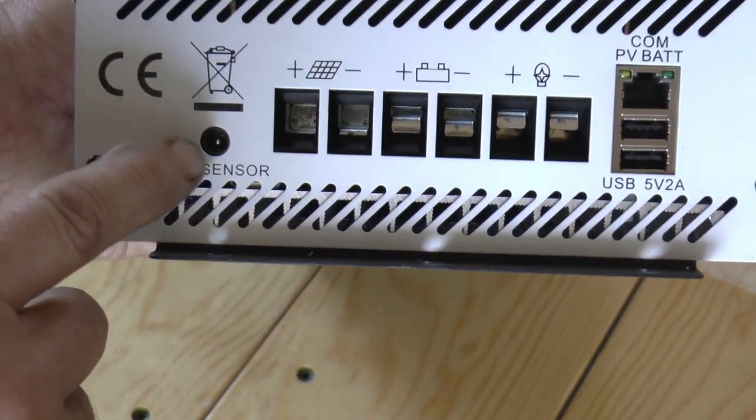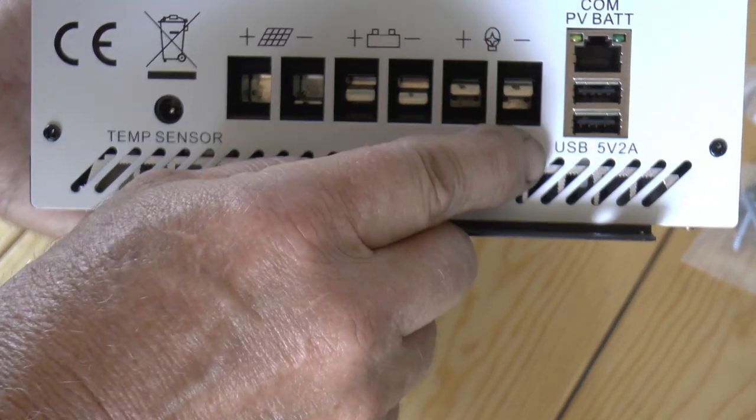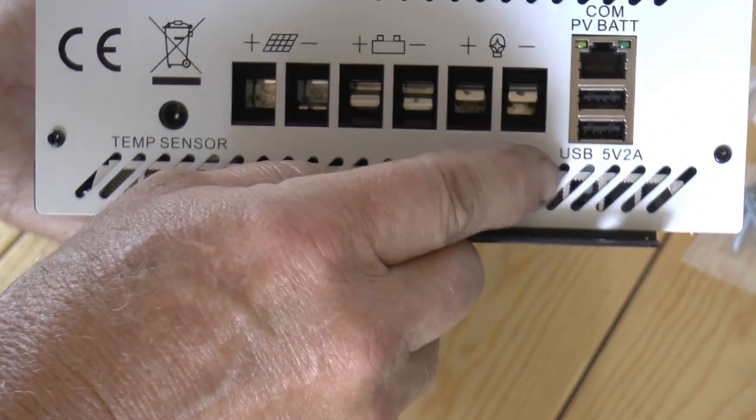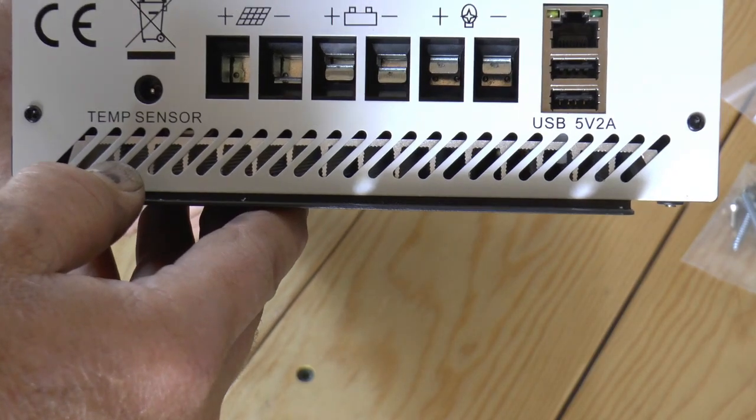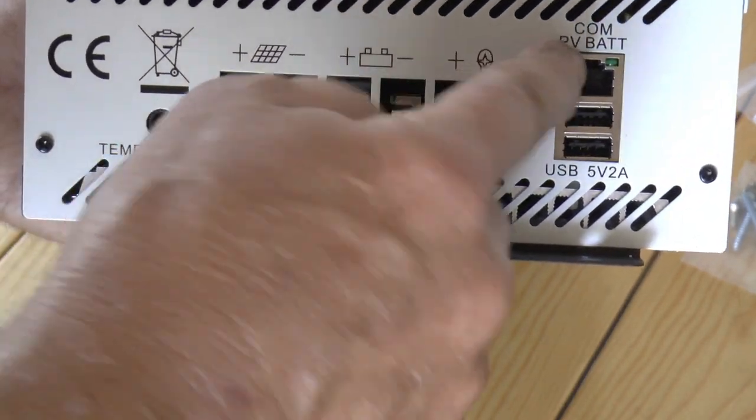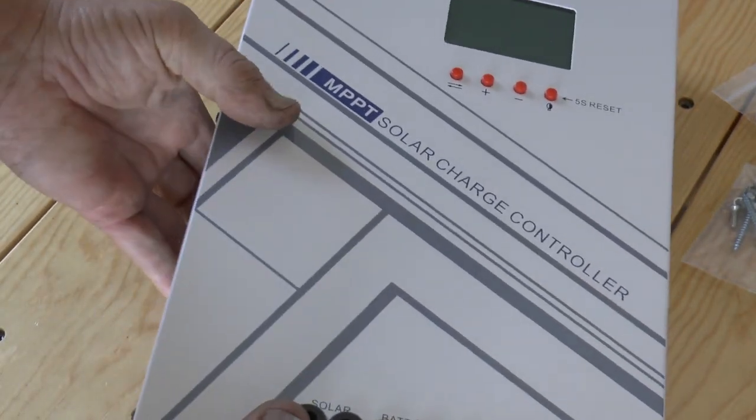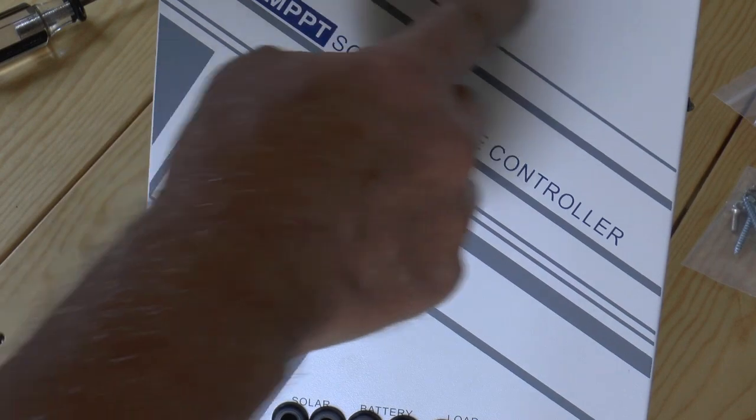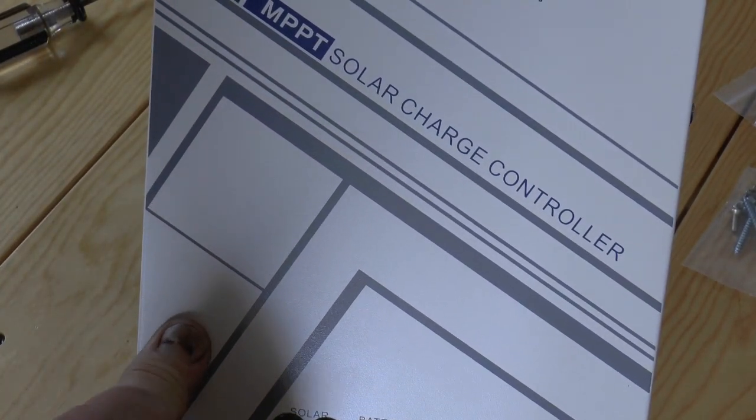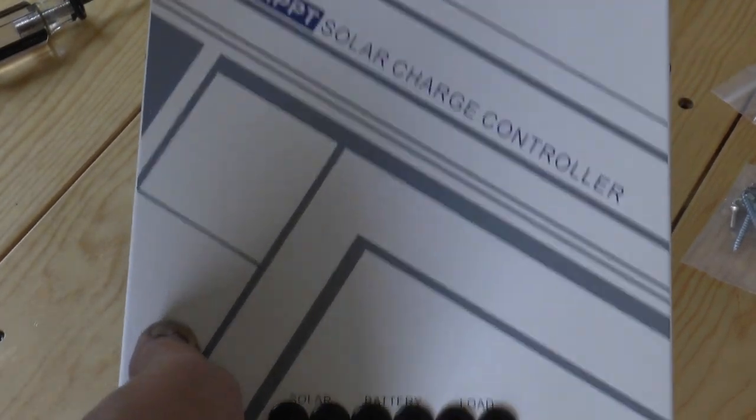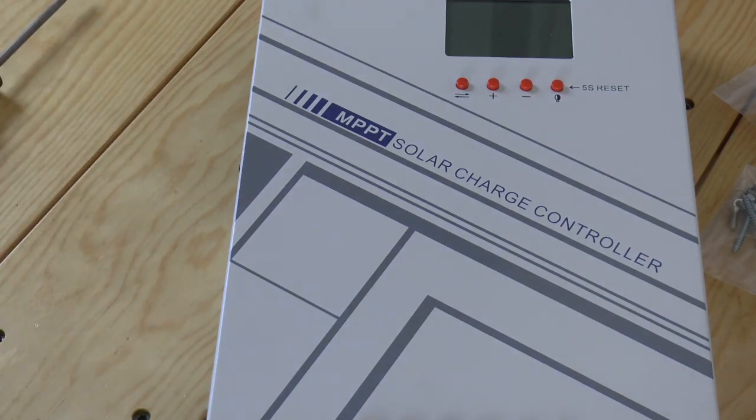A temperature sensor came with it. We got a com port and two USB 5 volt 2 amp ports, though I didn't see any mention about using those in the manual. Of course we got some buttons and the display in the front, so I guess this is a by the seat of your pants figure it out deal.